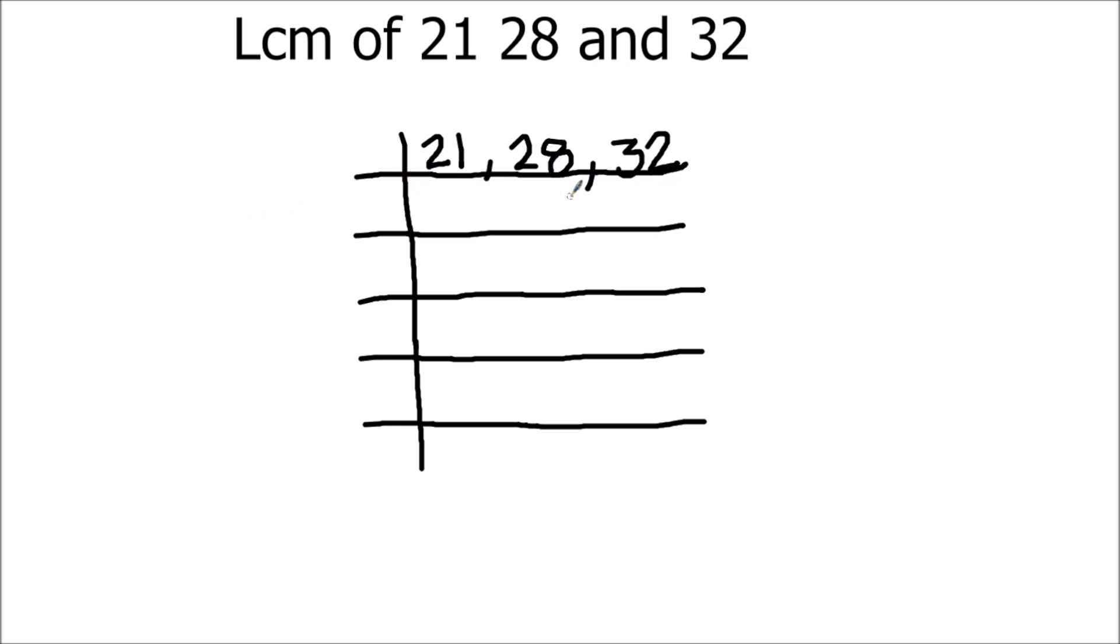The three numbers are 21, 28, and 32. Out of these three numbers, 28 and 32 are even numbers, so we'll start by dividing these numbers by 2.